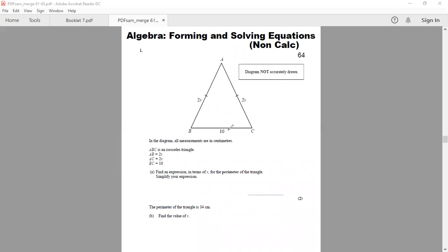So to work out the perimeter, we need to add all of the sides of the shape. We will add 2X and the other 2X and 10 together. And to simplify this expression, we're going to get 4X plus 10.